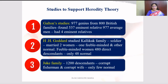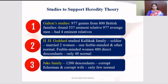Some psychologists say heredity is very important in growth and development; others say environment plays a major role. Galton studied 977 genius people from 800 British families and found that 537 were eminent due to their hereditary relationships. He also studied 977 average men and found only 4 eminent relatives among them, concluding that heredity plays a major role in growth and development.